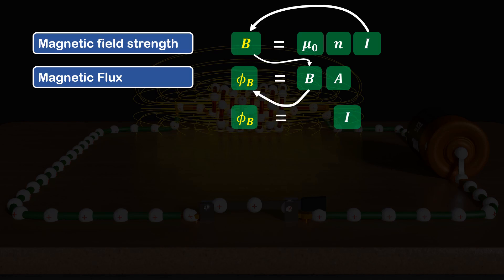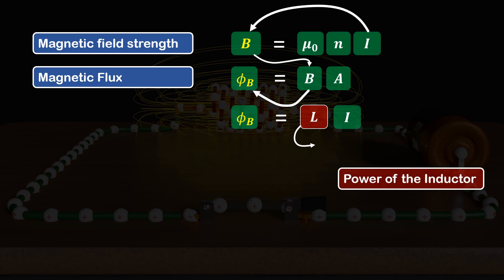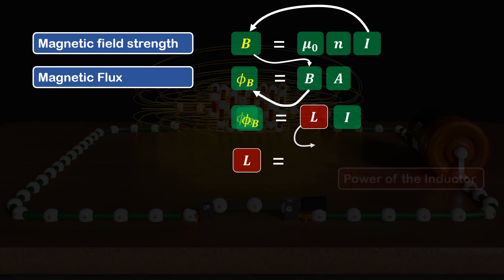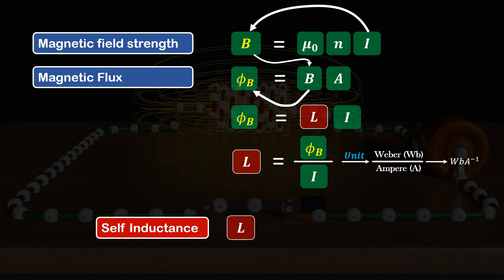When we remove the constant of proportionality, we get capital L, which is the coefficient of self-induction or inductance, which defines the power of the inductor. We can also write inductance capital L as phi-B over I, where the unit of magnetic flux is Weber and the current unit is ampere. Therefore, one unit of self-inductance becomes Weber per ampere. This relation also gives us a fundamental definition: self-inductance of an inductor or coil equals the magnetic flux linked with the inductor itself when unit current passes through the coil.